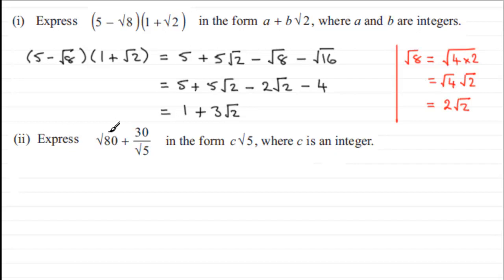Okay, so that's the first part. Now for the second part, we've got to express the square root of 80 plus 30 over the root of 5 in the form c root 5, where c is an integer. So again, what I want to do is just copy down our question here.